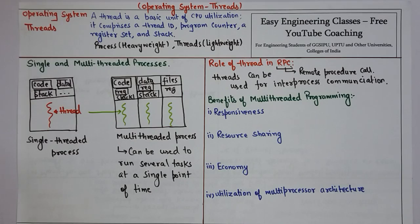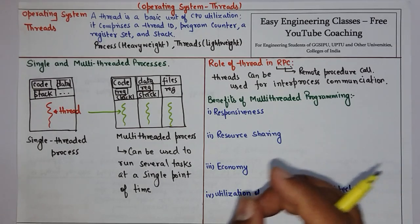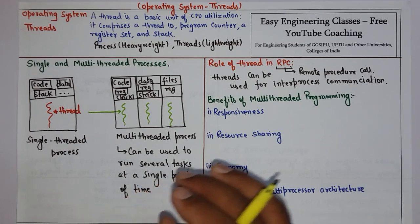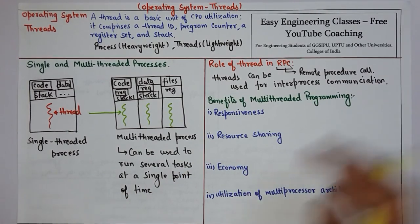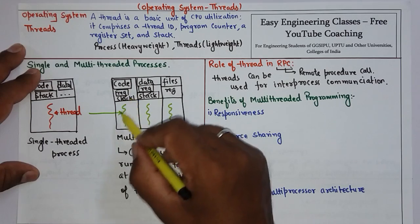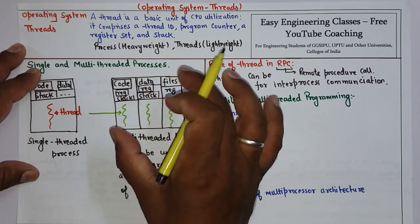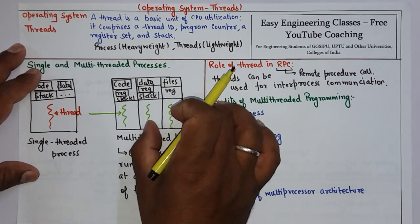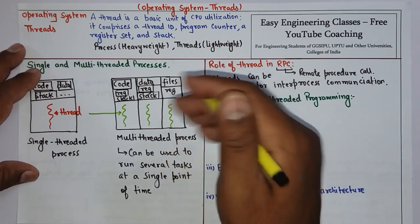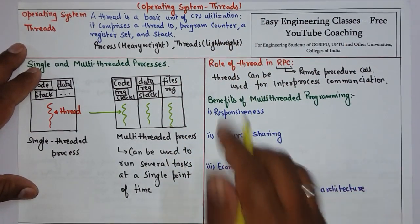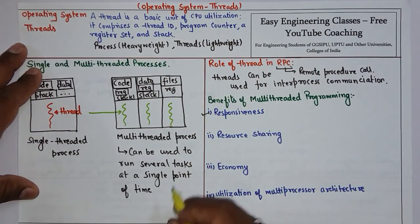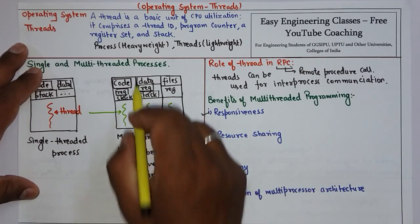Now we will see some of the benefits of multi-threaded programming. The first benefit is responsiveness. Since multi-threading is used in interactive applications, it allows a program to continue running even if a part of it is blocked, which increases responsiveness to the user. For example, if one particular section is not responding, the other sections can still respond to the user.